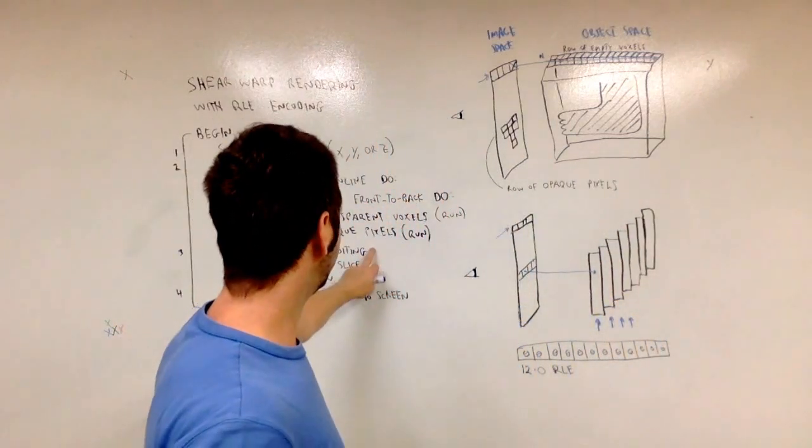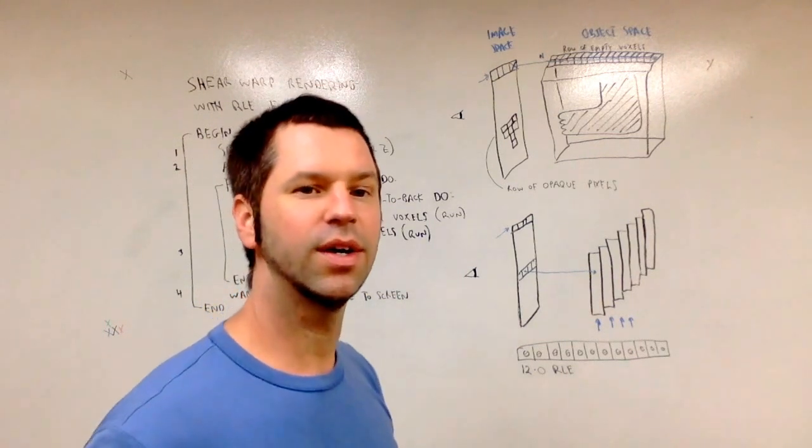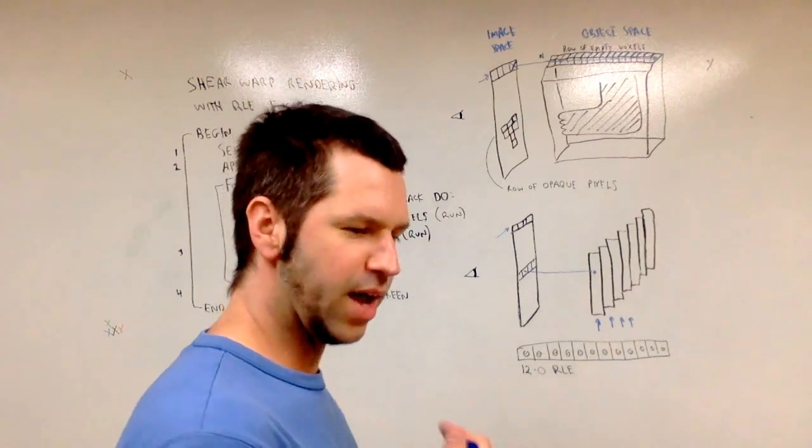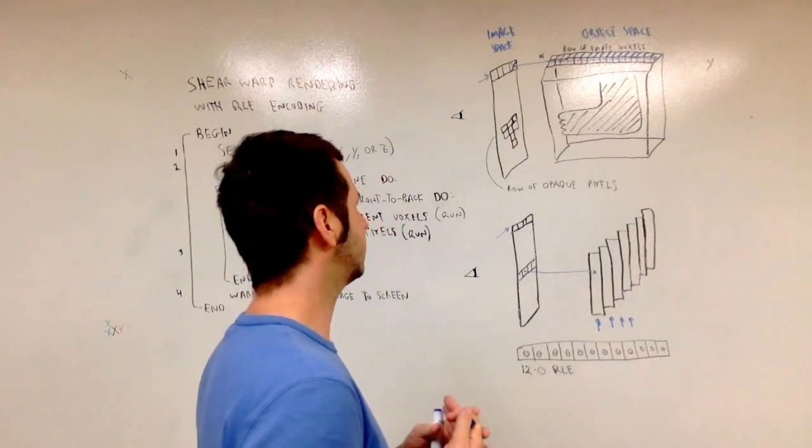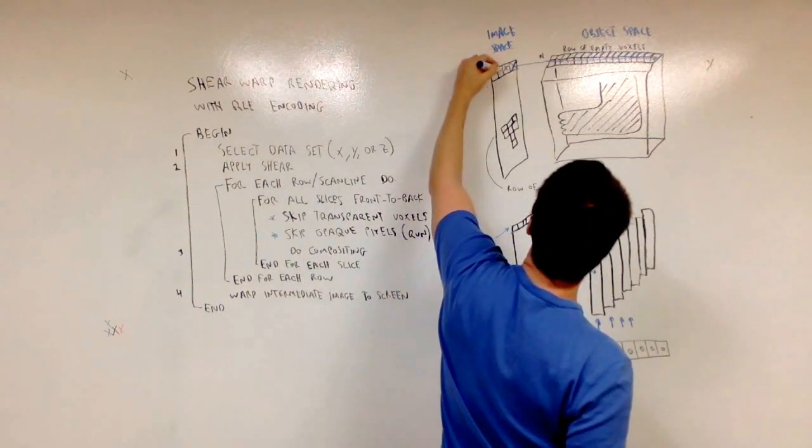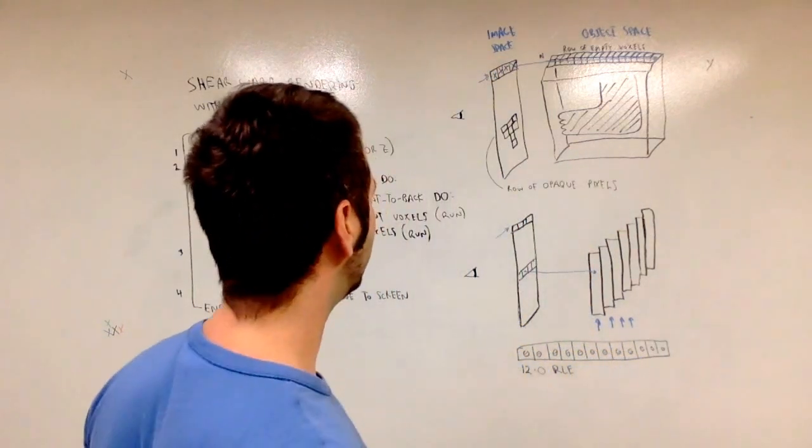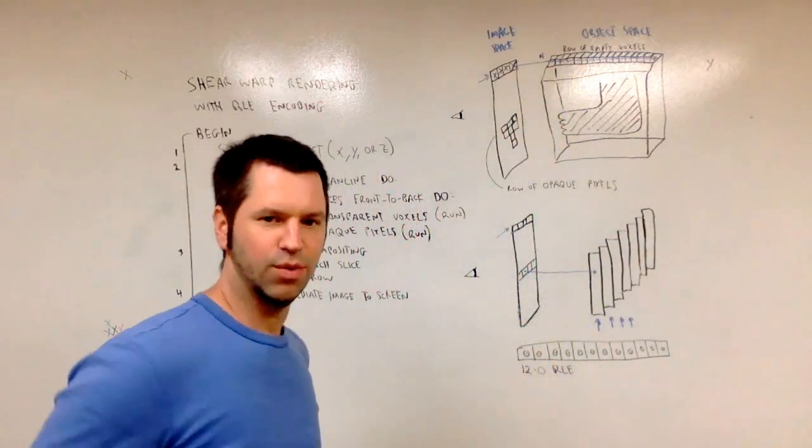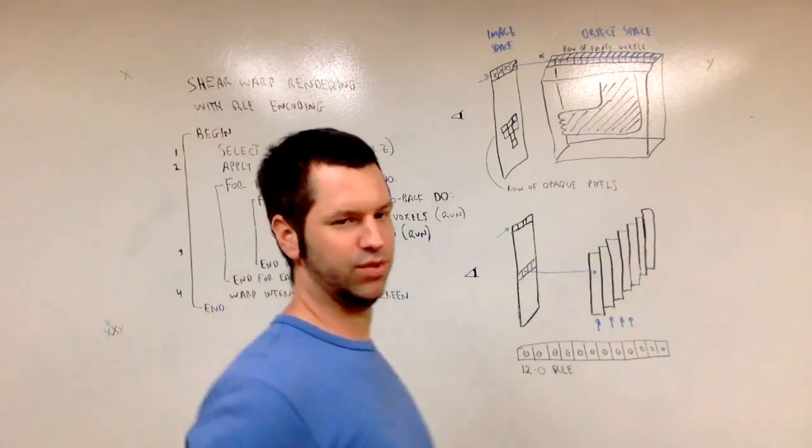And then if we skip the transparent voxels, we can skip the compositing phase of the ray casting. And that happens a lot for these typical medical data sets. There's a lot of empty space. That could happen for a whole row of voxels. We could skip a whole row and we could keep going. We don't know exactly the details about how many we can skip, but we can skip a significant percentage.